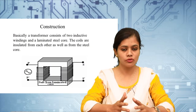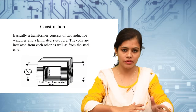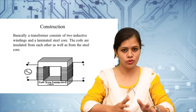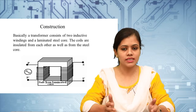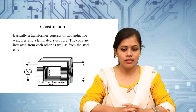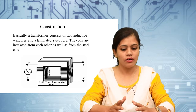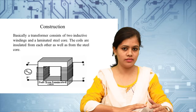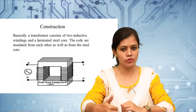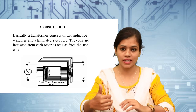Next is construction. What is the construction of a transformer? Basically a transformer consists of two windings — primary winding and secondary winding — and a magnetic core. How do we decide which winding is primary and which is secondary? When the winding is connected to the source side, that is the primary winding. When the winding is connected to the load side, that is the secondary winding.